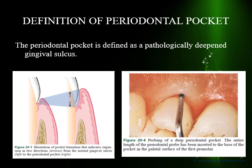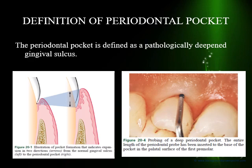Here is a simple clinical picture of what it looks like when you insert a probe into a periodontal pocket. If this is a Williams probe, it has gone down almost 10 to 12 mm. Two words to remember here are deepening and pathology — it is a deepened gingival sulcus and it is due to pathology.